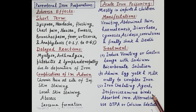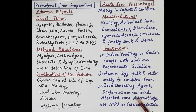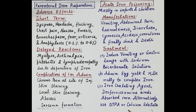If iron is already absorbed into the blood, iron chelating agents are administered. Desferioxamine is the chelating agent of choice and binds to the absorbed iron. Alternatively, DTPA or calcium edetate can be used as chelating agents to chelate and remove iron from the body.